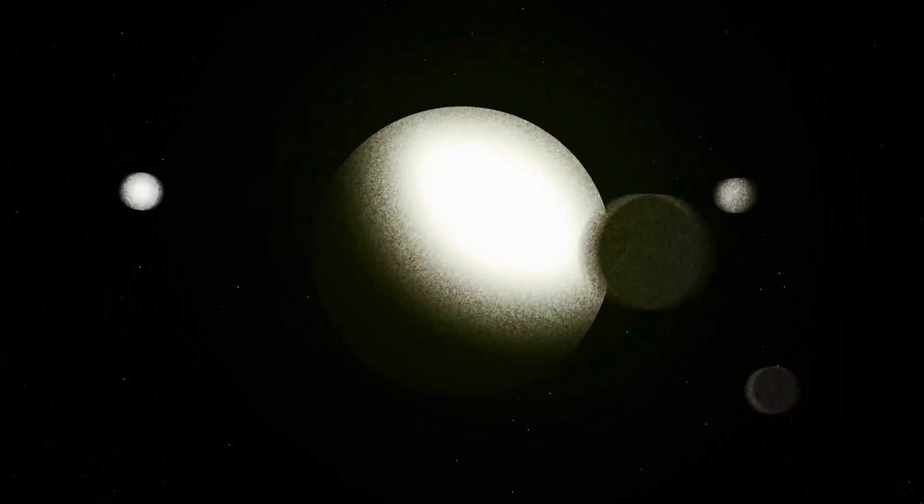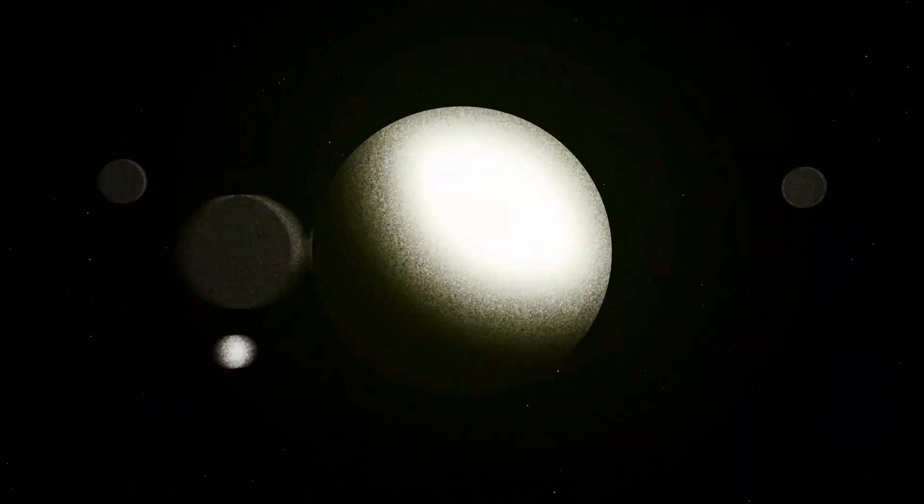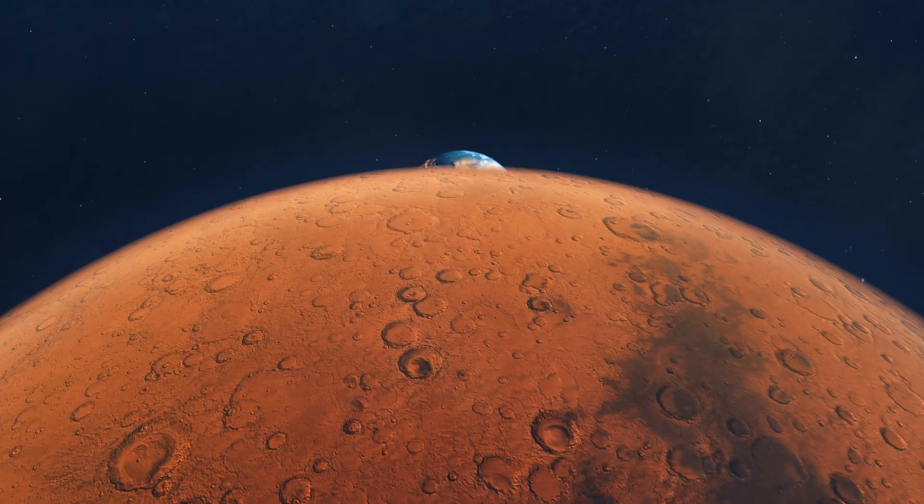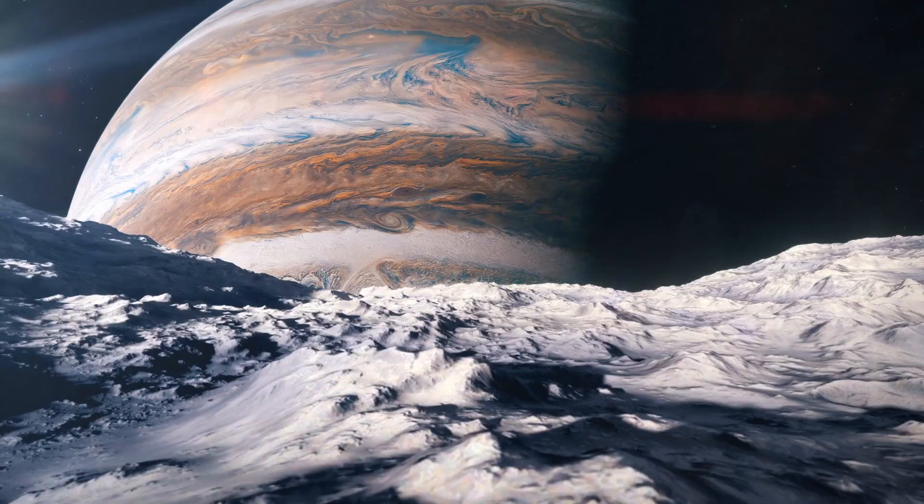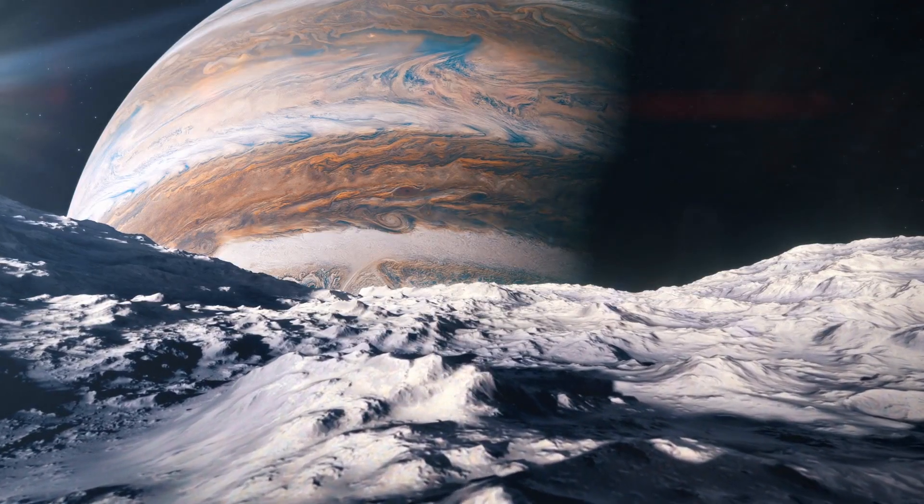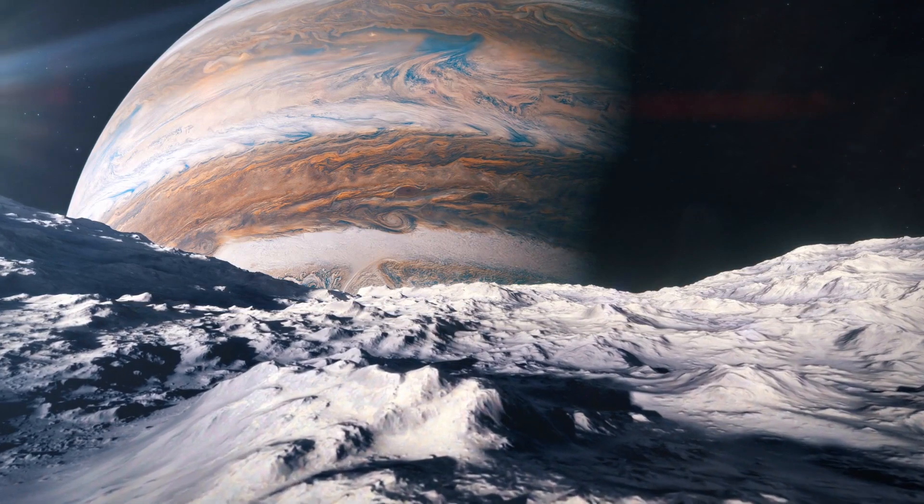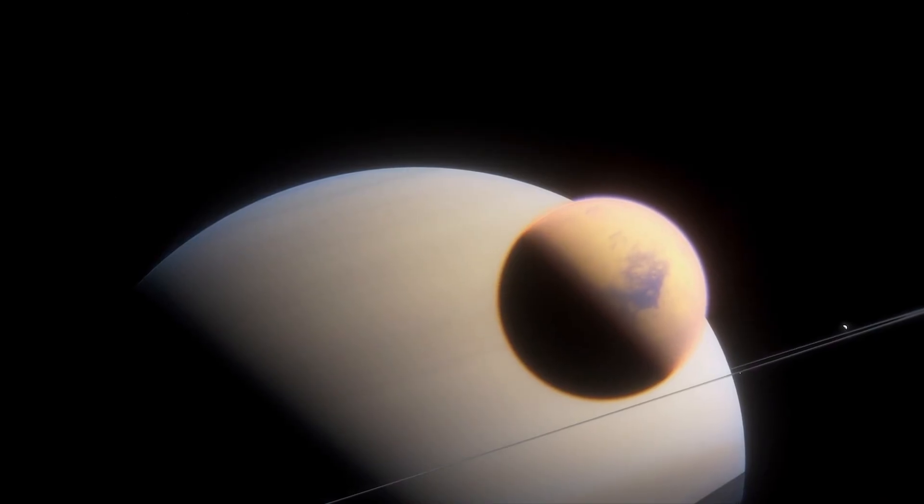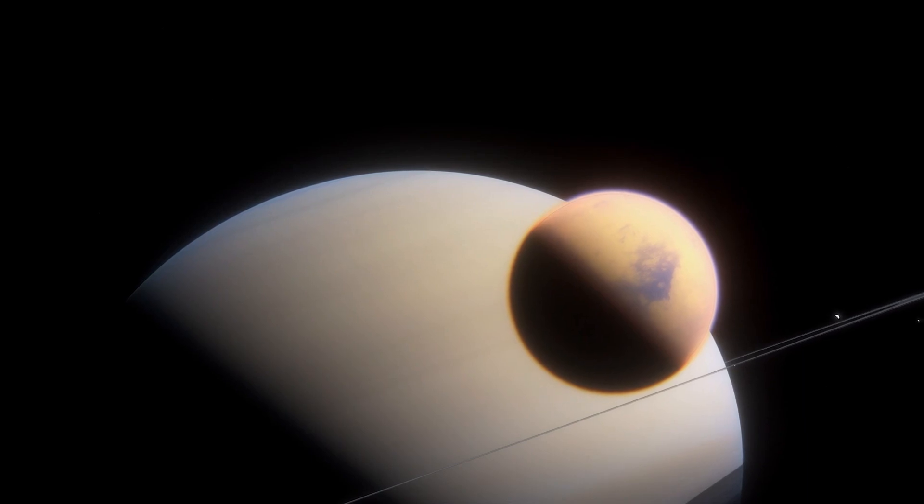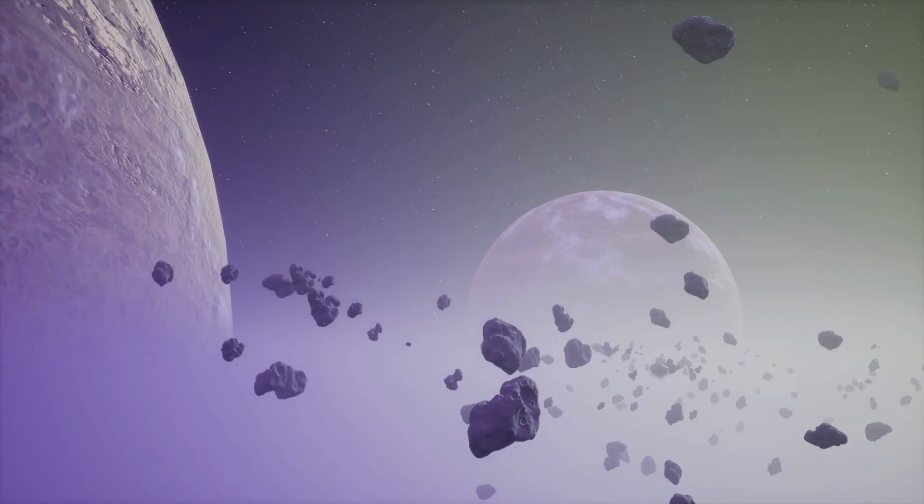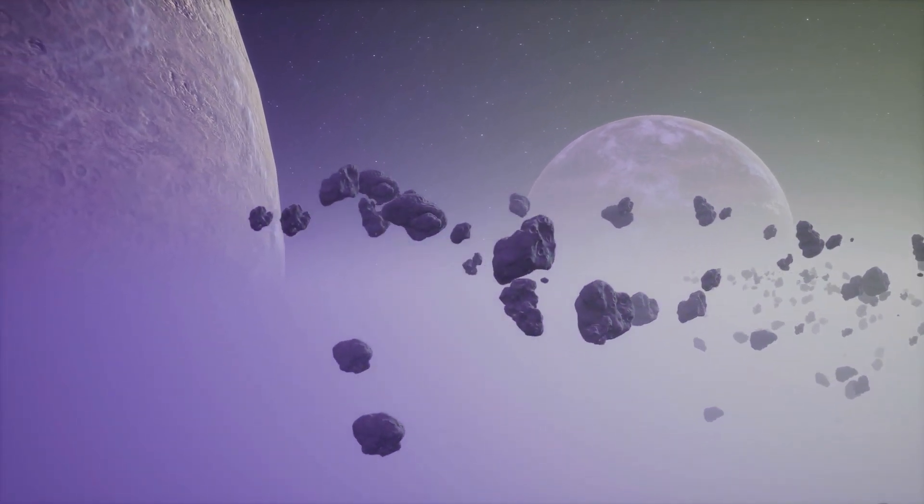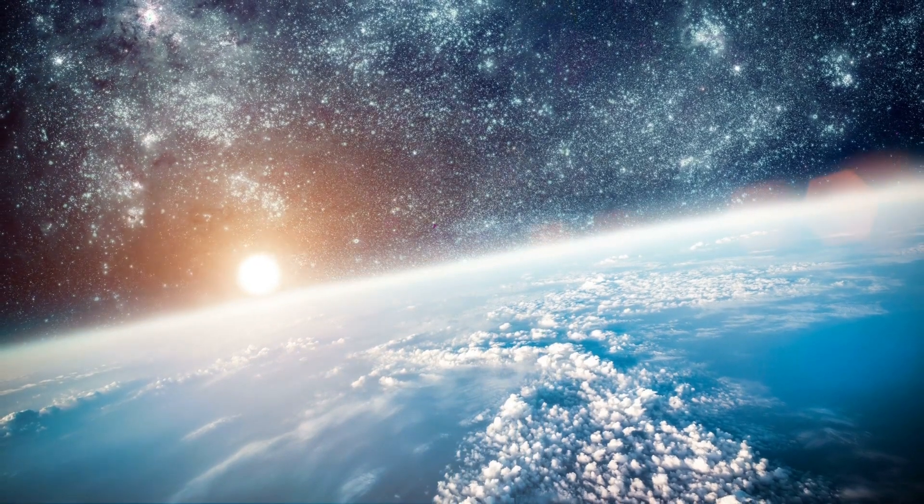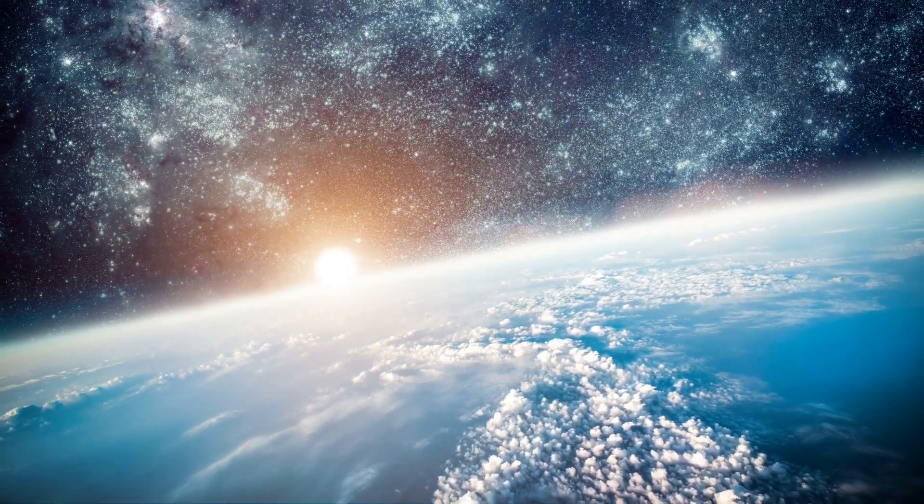Our solar system is a well-established cosmic neighborhood, with planets orbiting the sun in stable paths. A rogue planet, a solitary wanderer, would need to intersect this well-ordered system to pose a threat. The chances of such an intersection are incredibly slim, given the immense distances between celestial bodies. Moreover, our solar system's gravitational forces are powerful enough to influence the trajectory of any incoming object. If a rogue planet were to enter our solar system, it's more likely to be captured by the gravity of a giant planet like Jupiter or Saturn, rather than colliding with Earth. While the possibility of a rogue planet collision can't be entirely dismissed, it remains a highly improbable scenario.